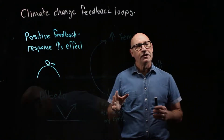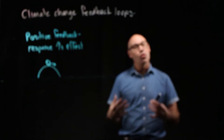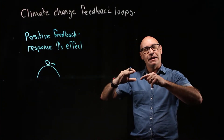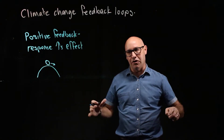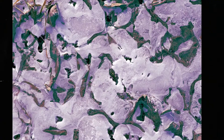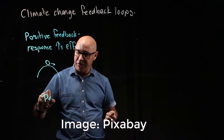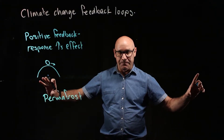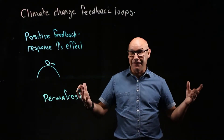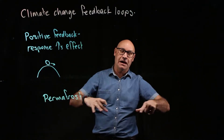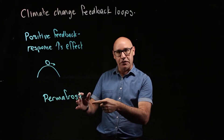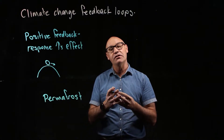This second positive feedback loop is also related to melting ice, but this time we're talking about a region underneath the North Pole called permafrost. It's been frozen for thousands of years. Underneath this frozen region there are grasses that have been dead for thousands of years, covered by ice. As temperatures get warmer, the permafrost is melting and exposing this dead grass.